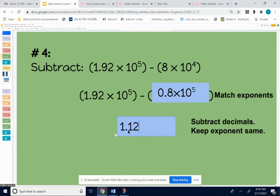So 0.8 would be right there. So 1.92 minus 0.8 would be 1.12, control period, 1.12 times 10, control period, fifth. So subtract 1.92 minus 0.8, I get 1.12, and then my 10 to the fifth stays the same.